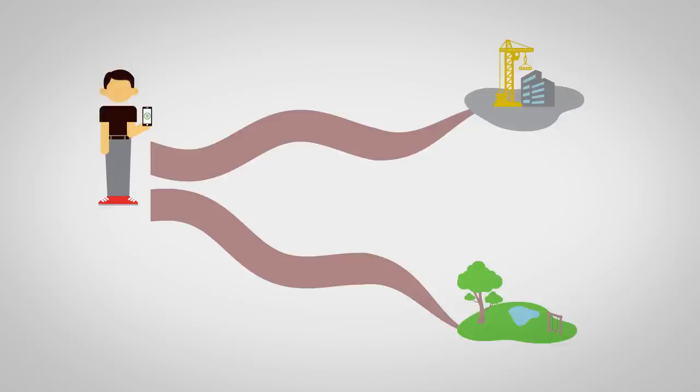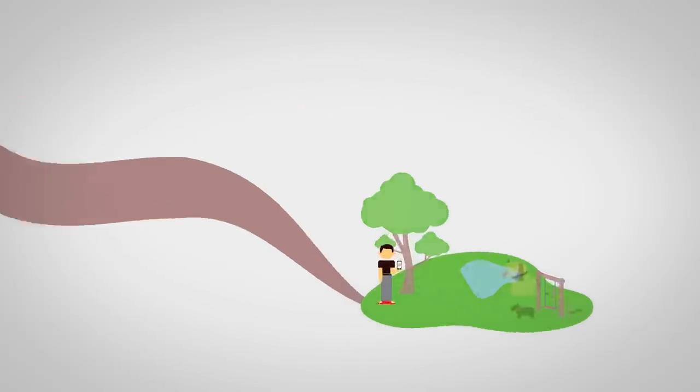When they view their schedule, they can see where they are working for a specific shift. In this instance, the employee is scheduled at Central Park as a dog walker for his 11 a.m. shift.